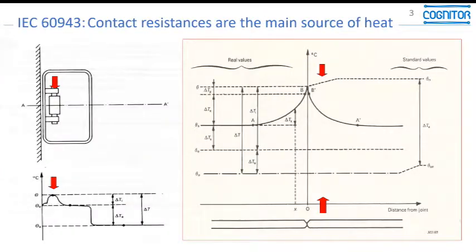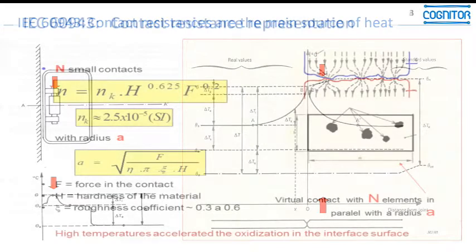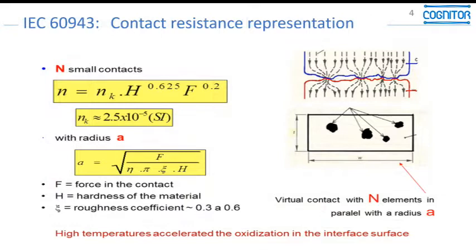Every time we speak about temperature rise, the most impacting element — the main source of heat in one electrical kit — are the contact resistors. This representation that you see in this figure here, in these slides, is one representation used in the IEC standard to calculate contact resistance, where the contacts are represented by N small contacts with radius A.